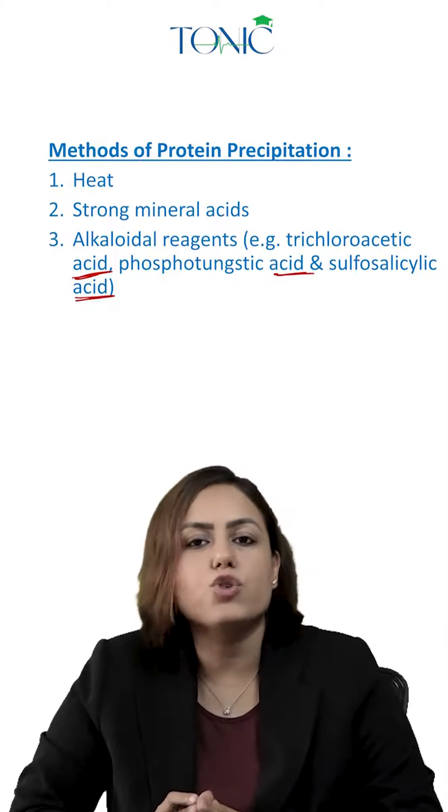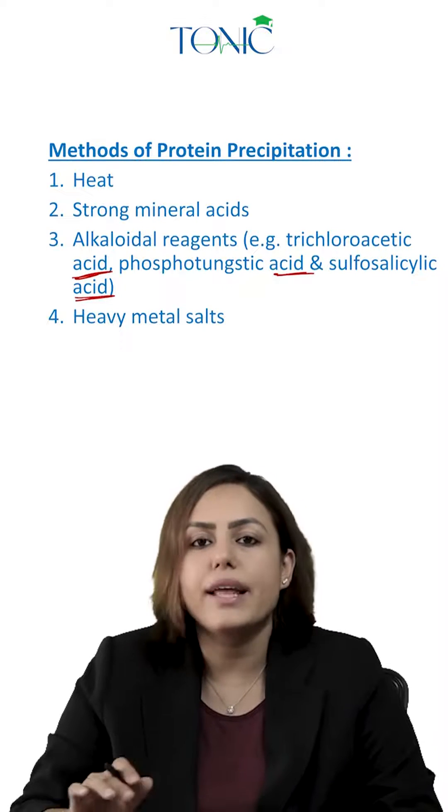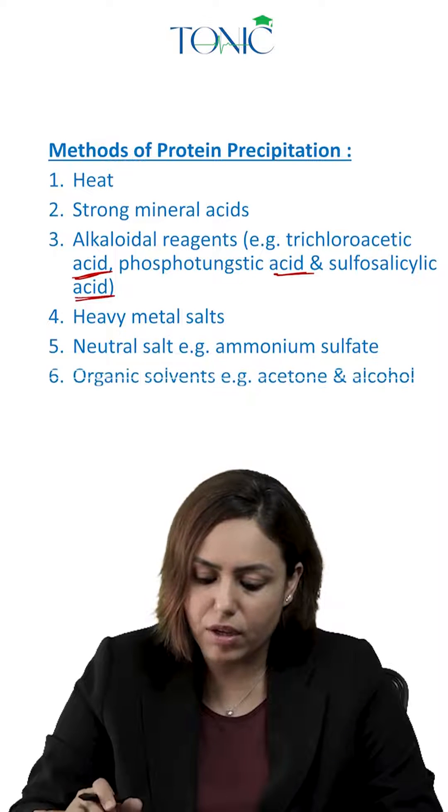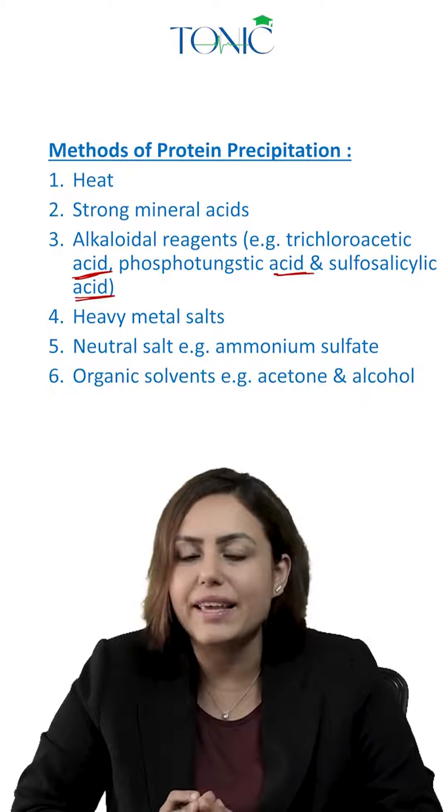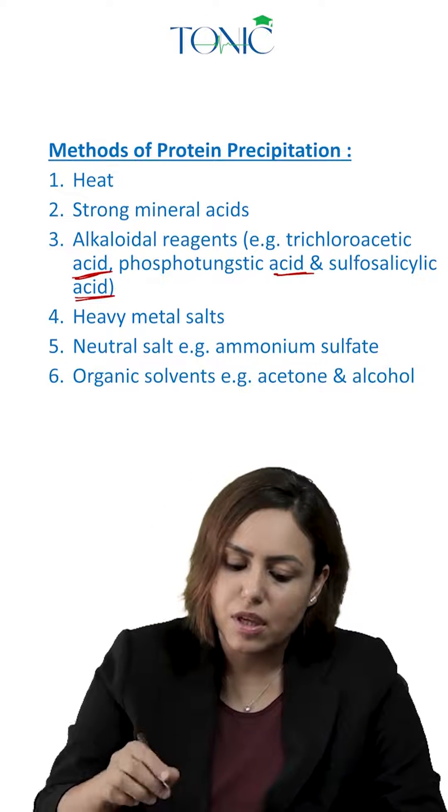Then heavy metal salts like lead and mercury, then neutral salt like ammonium sulfate, and then one last point—organic solvents like acetone and alcohol. So how to learn this list? Very easy to learn.